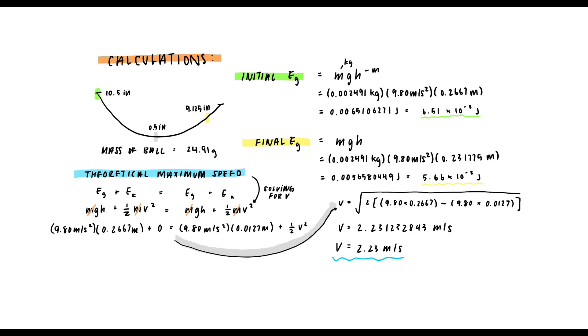So essentially we're never able to get that theoretical maximum speed we calculated because of all of these variables. And that's why the 2.23 meters per second is theoretical and not accurate to what is happening to the ball on the ramp.